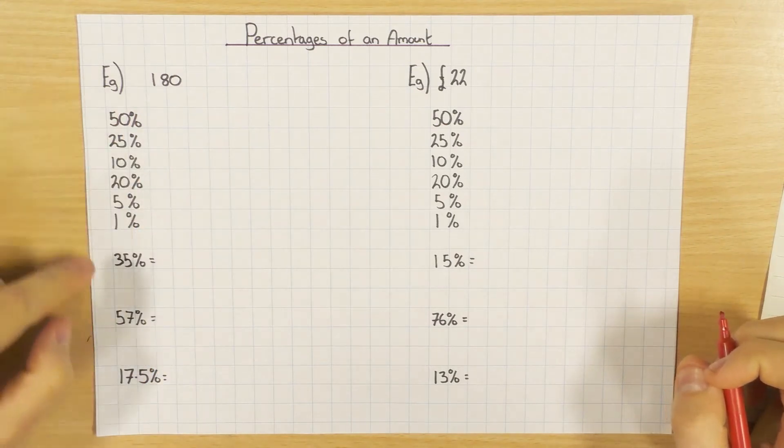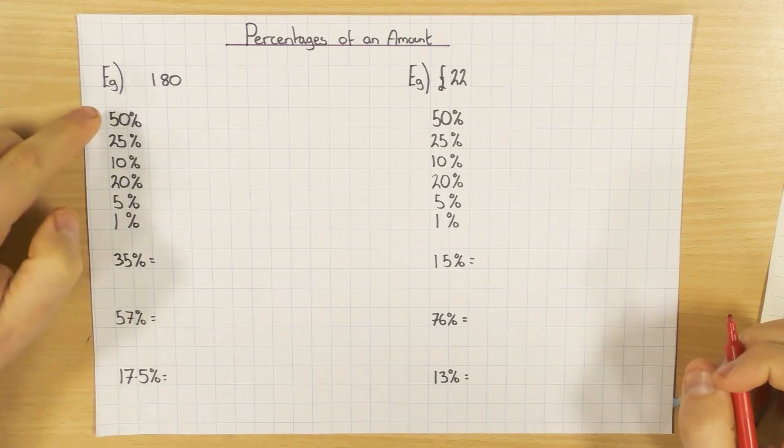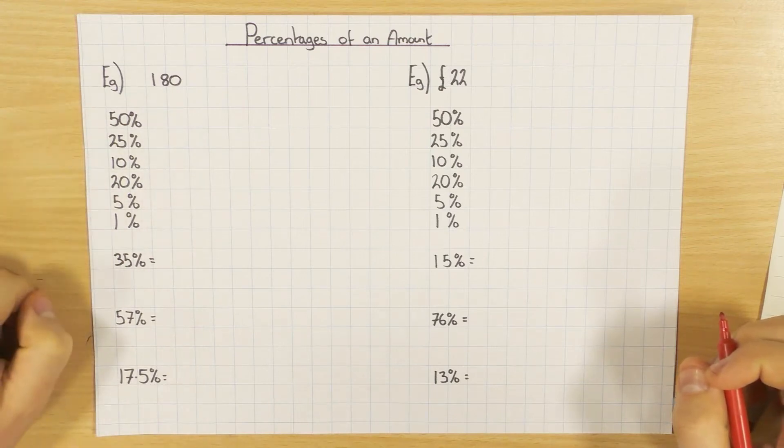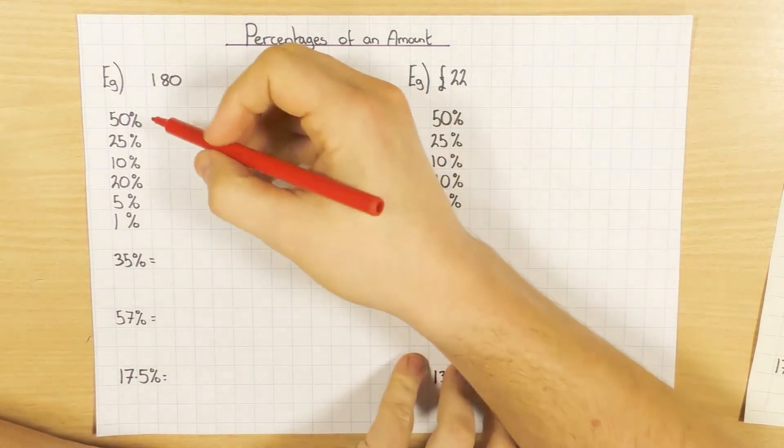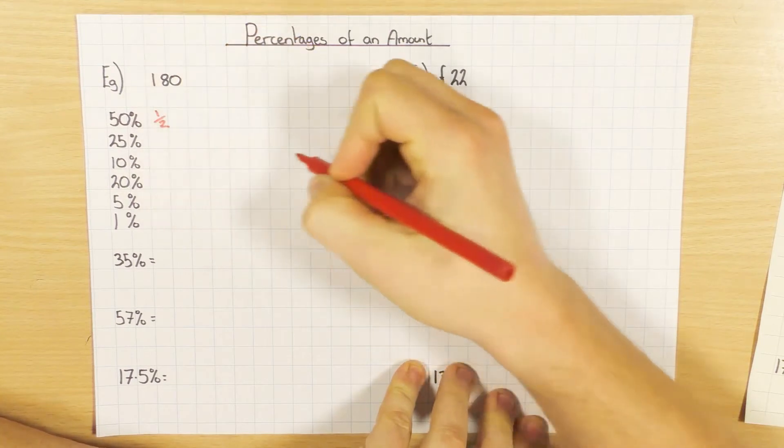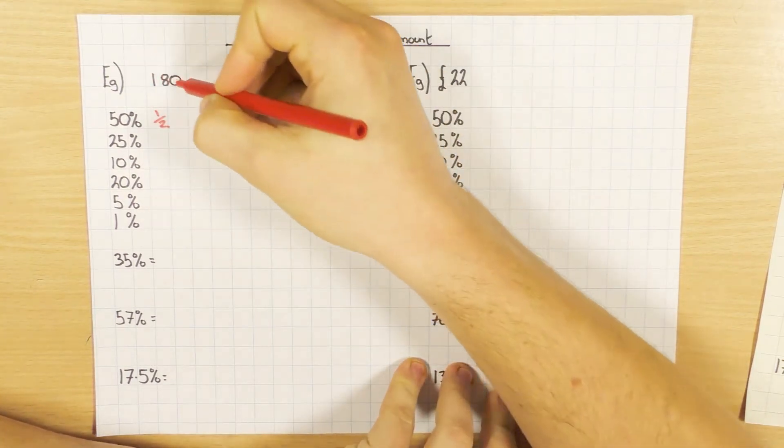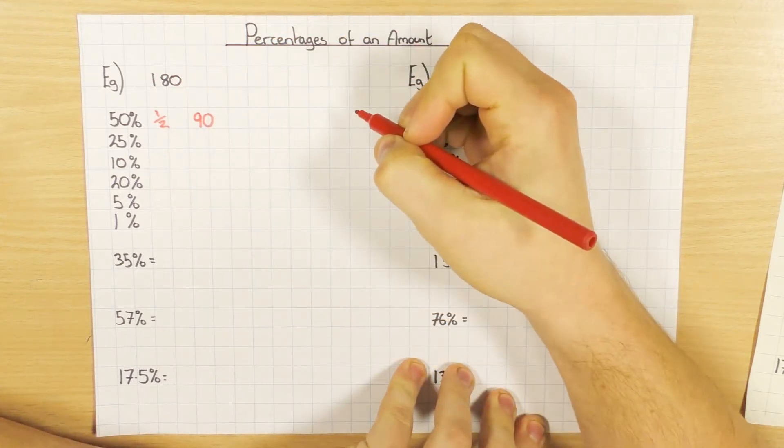First of all, the non-calculator way. My first example here, I've got 180, and whatever percentage you're trying to find out—35%, 57%, 17.5%—you can generally work out any percentage if you have these ones here. Whenever you do a non-calculator percentage lesson, you probably start with these ones. So to find 50%, it's really easy, all we do is half the number. Half of 180 will obviously be 90, so 50% is 90.